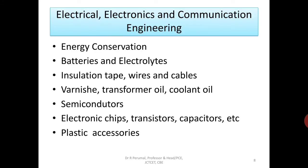In electrical, electronics and communication engineering, chemistry is applicable in energy conservation. To make batteries and electrolytes, thorough knowledge of chemistry is required. Insulation tapes, wires and cables are made out of chemicals. Varnish, transformer oil, coolant oil, semiconductors, electronic chips, transistors, capacitors and plastic accessories used in the electronics and electrical industries are all made out of chemistry.